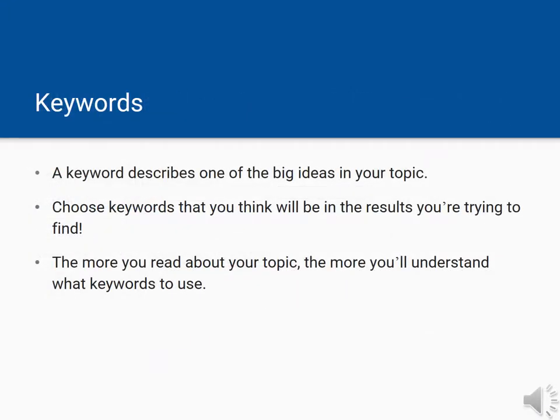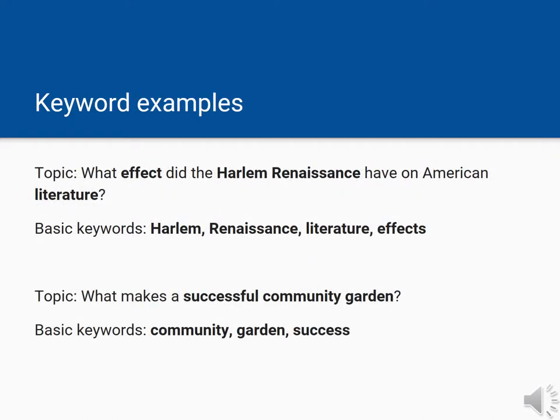What this means for us as searchers is that we have to create search terms or keywords that we think will show up in the results we're looking for. For example, you can see here how we might create keywords for topics on the Harlem Renaissance and also on community gardens. For the first topic, words like Harlem, Renaissance, and literature are good keywords to begin with.